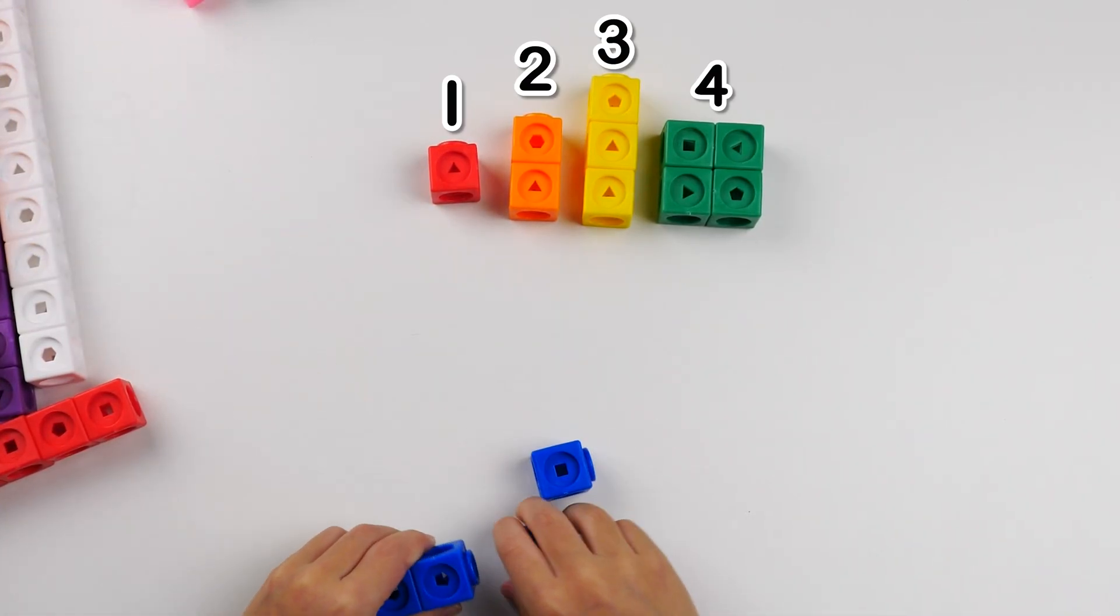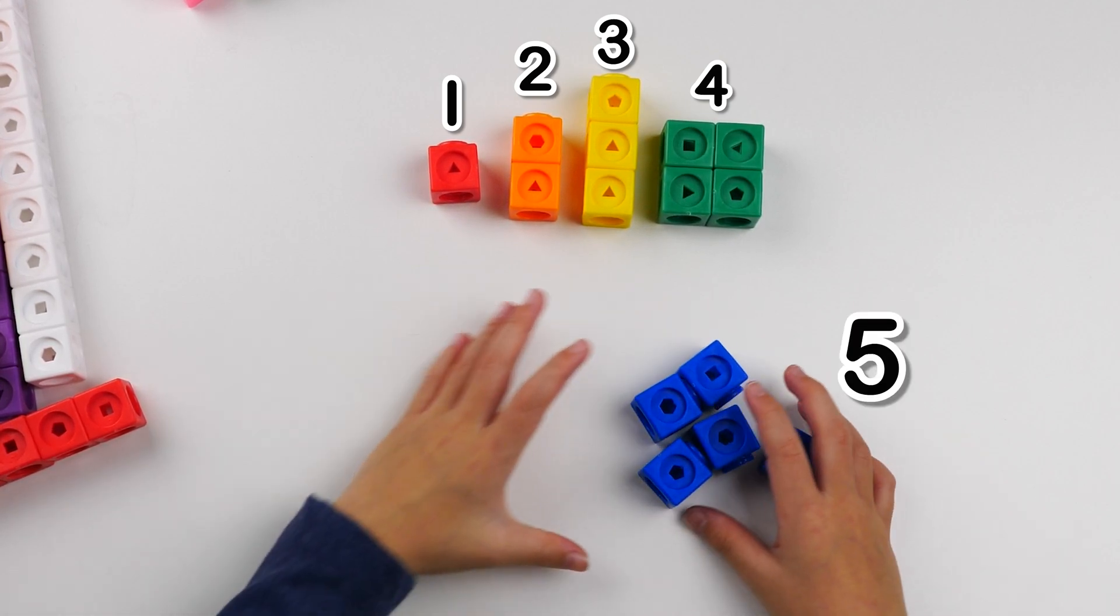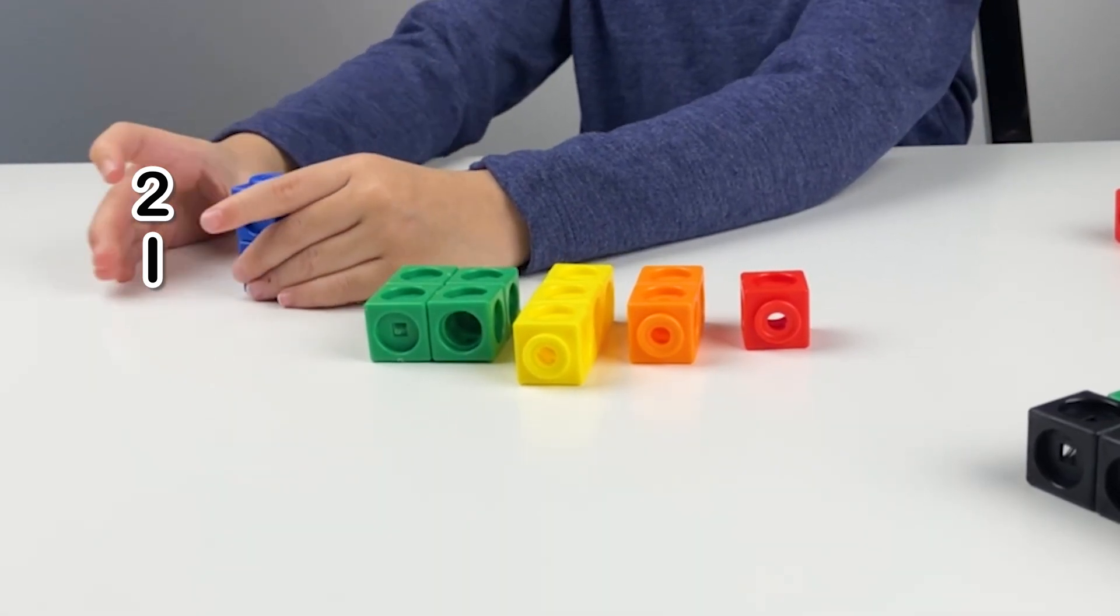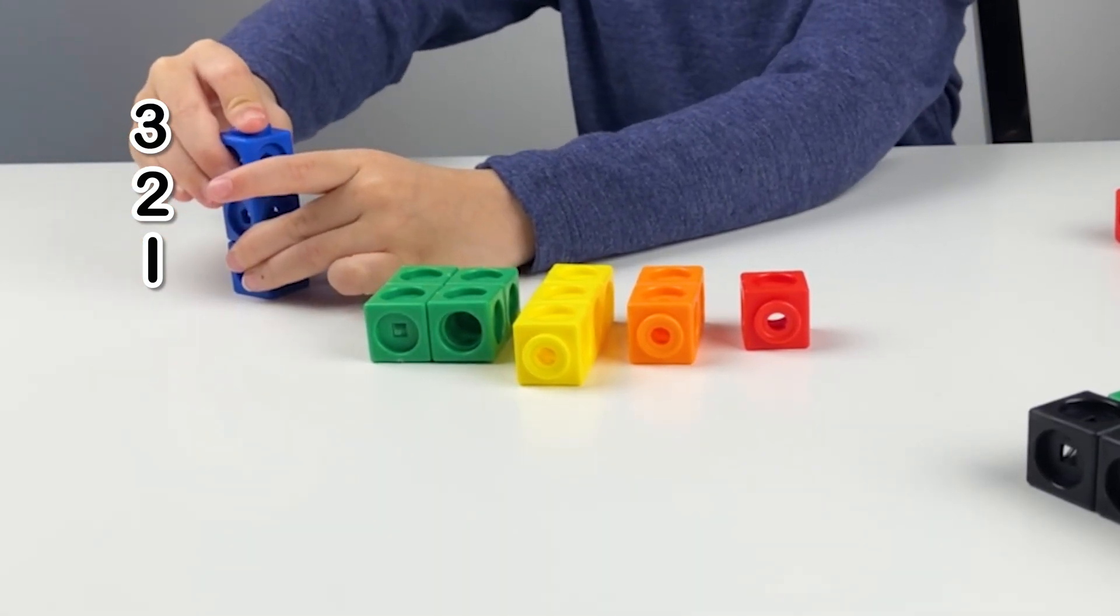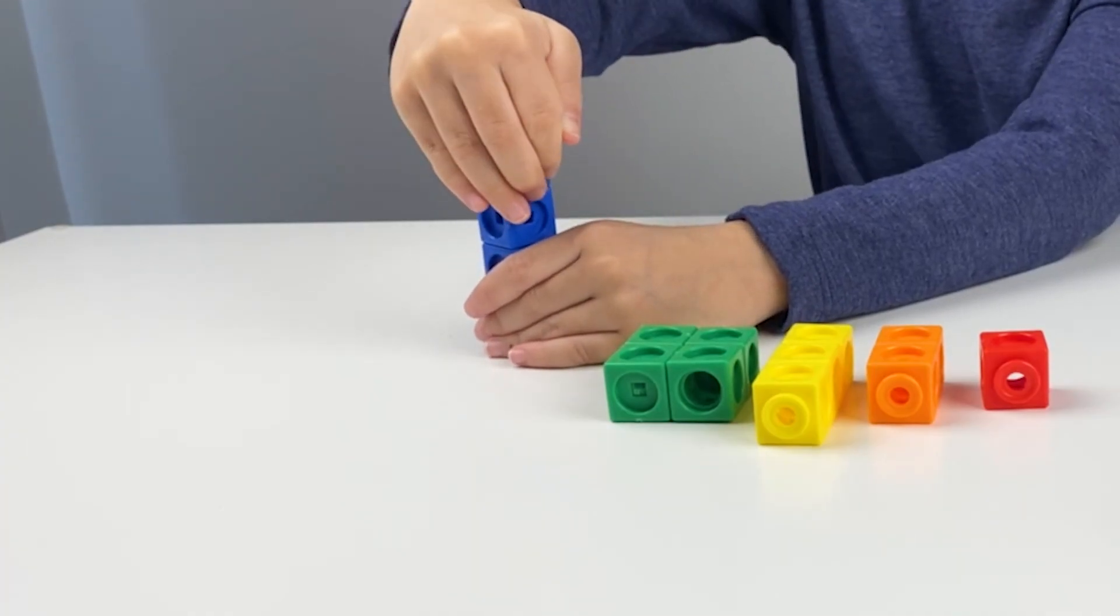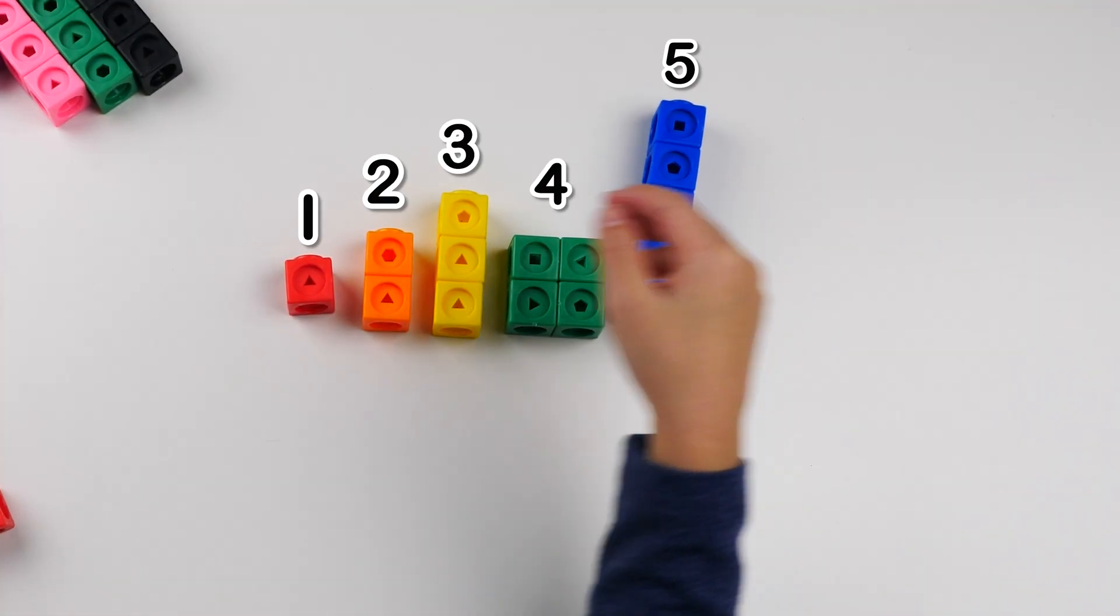Which means I need to make 5. Okay, here are some 5 blocks. So we have 1, 2, 3, 4, and 5. Here is number block 5.